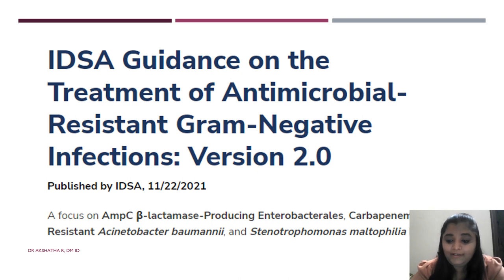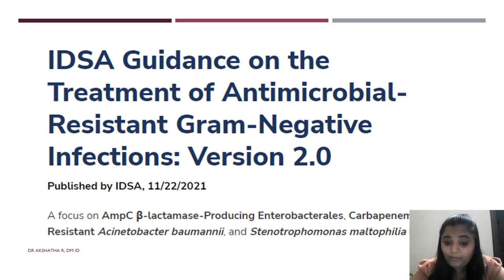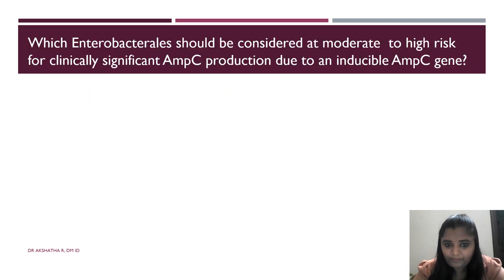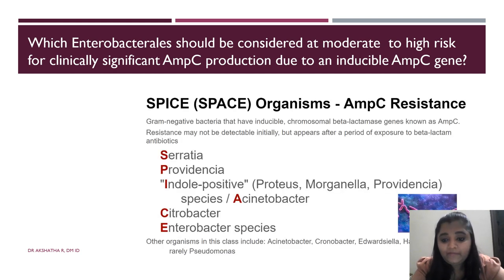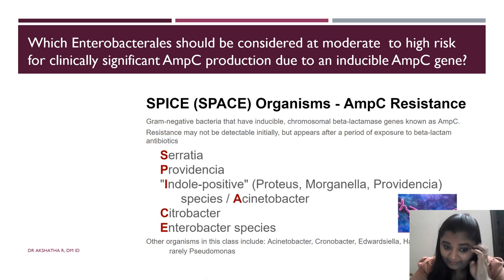Now moving to IDSA AMR Guidance 2.0, released on 22nd November, focusing on AmpC beta-lactamase, carbapenem-resistant Acinetobacter baumannii, and Stenotrophomonas maltophilia. Which Enterobacteriaceae should be considered at moderate to high risk for clinically significant AmpC production due to inducible AmpC genes? We know the SPACE mnemonic — Serratia, Providencia, indole-positive Proteus, Morganella, Citrobacter, and Enterobacter. This guidance focuses on the moderate-to-high risk organisms: Enterobacter cloacae complex, Klebsiella aerogenes (formerly Enterobacter aerogenes), and Citrobacter freundii.